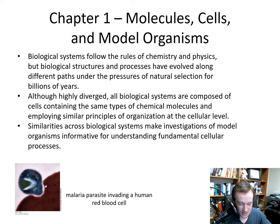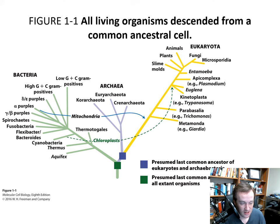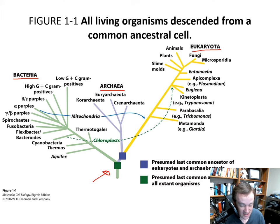All living organisms descended from a common ancestor, and this is the basis of evolution. Here we see the family tree, or evolutionary tree, or dendogram, showing the different domains. We have bacteria, we have archaea, and we have eukaryotes. This green square is showing the last common ancestor of extant living species. From there, bacteria were first to branch off, then archaea, and lastly the eukaryotes.